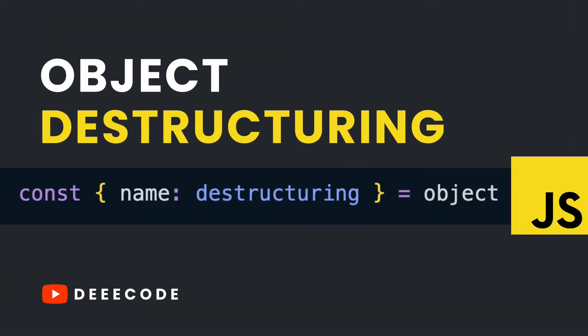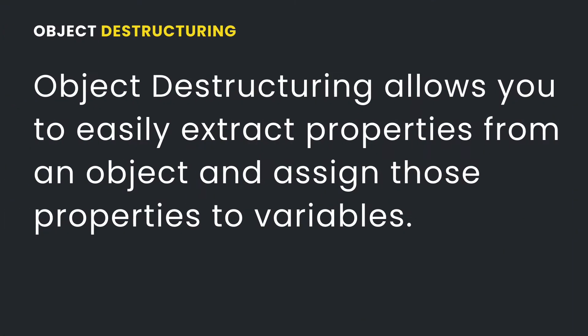Welcome to my YouTube channel where I simplify the web. In this video I'll be simplifying object destructuring in JavaScript. In the previous video, which you can find in the video description below, I simplified array destructuring in JavaScript and showed you how you can easily extract values from an array and assign those values to variables. In this video I'll be focusing on object destructuring, which similarly allows you to easily extract properties from an object and assign those properties to variables. I'm going to be showing you some examples to explain the different things you can do with object destructuring.